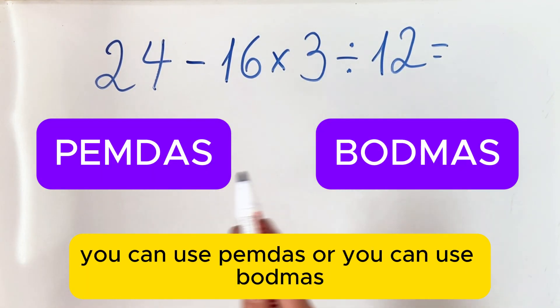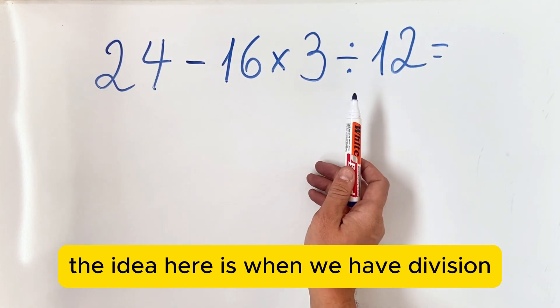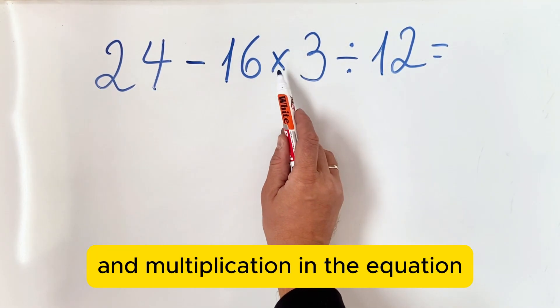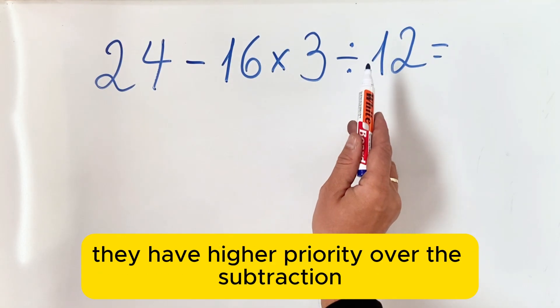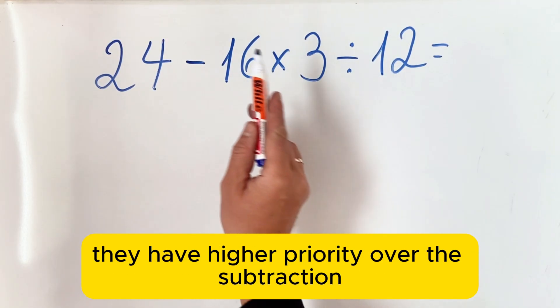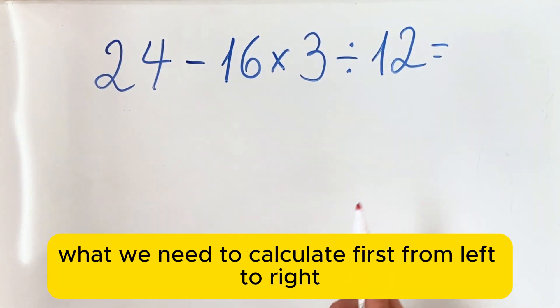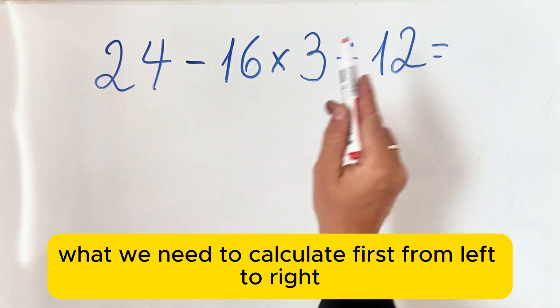The idea here is when we have division and multiplication in the equation, they have higher priority over the subtraction. So in this case, what we need to calculate first from left to right is the multiplication, then the division, and only then the subtraction.